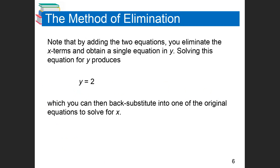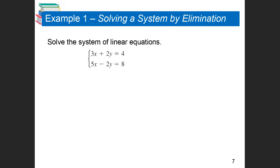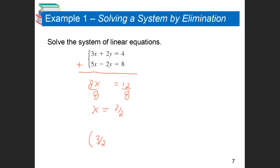In this next problem, if I add straight down I see that the Y's are going to cross off, so I'll use the elimination method. 3X plus 5X is 8X. 2Y plus negative 2Y goes away. 4 plus 8 is 12. Divide 12 by 8, and I end up with X equals 3 halves.